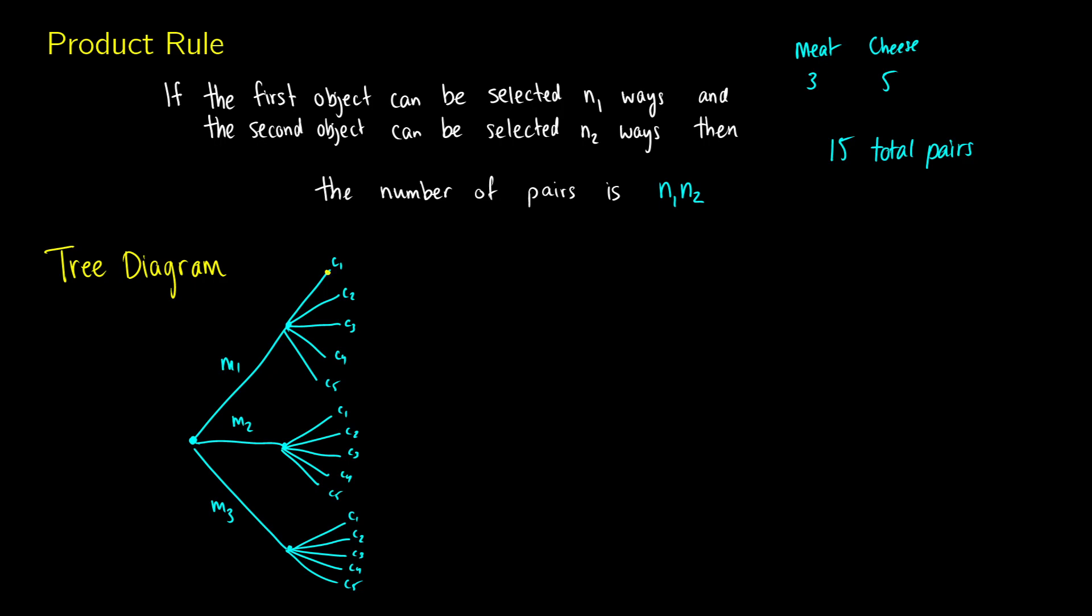If we count up how many endpoints we have, we're going to end up with 15 points. And this is exactly what this product rule is telling us. Now this is just two different objects, but you can imagine that if we were to have more objects, we just end up getting more branches. So if we have n1 ways, n2 ways, n3 ways, all the way up to nk different ways. The product of these is just going to be n1 times n2 times n3, all the way up to nk different ways.